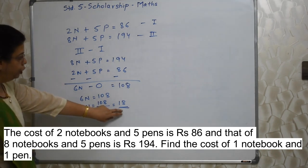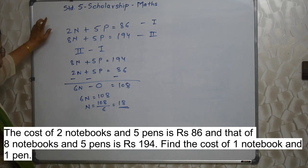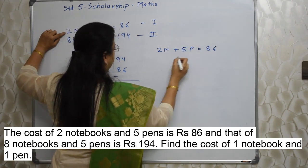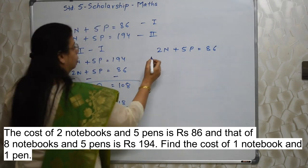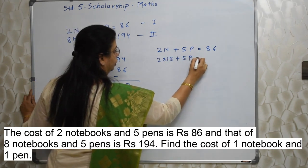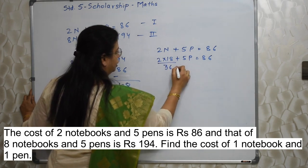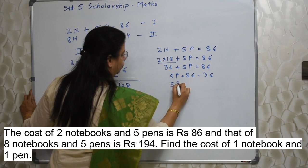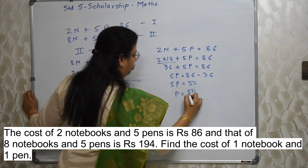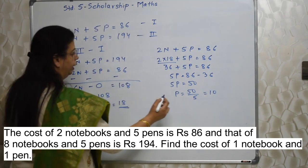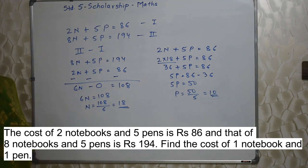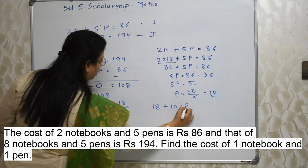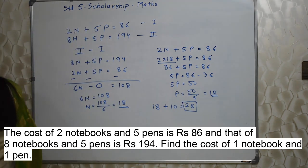We have found n. Now substitute 18 in any of the equations to find p. We need the value of p as well. So 2n plus 5p equals 86 becomes 2 into 18 plus 5p equals 86, which is 36 plus 5p equals 86. Therefore 5p equals 86 minus 36, so 5p equals 50. Thus p equals 50 upon 5, which is 10. Now we have n equals 18 and p equals 10. They are asking the cost of 1 notebook and 1 pen: 18 plus 10 equals 28. So rupees 28 is our answer. Very, very interesting!